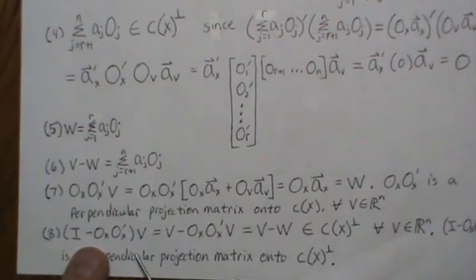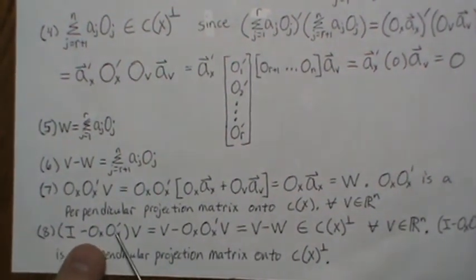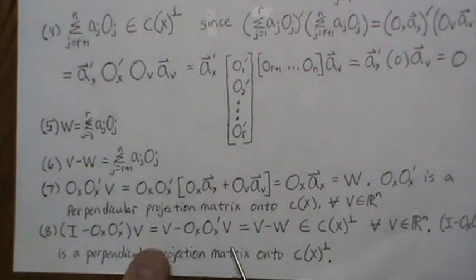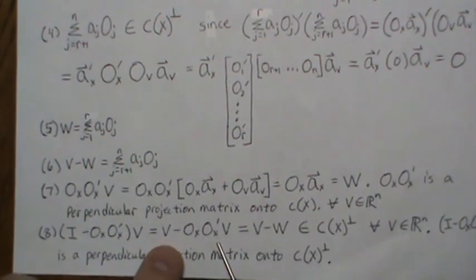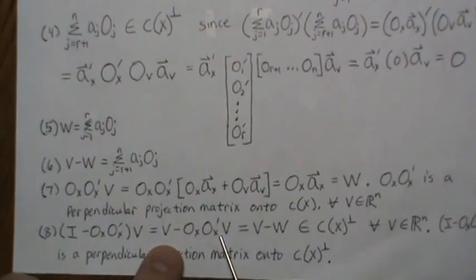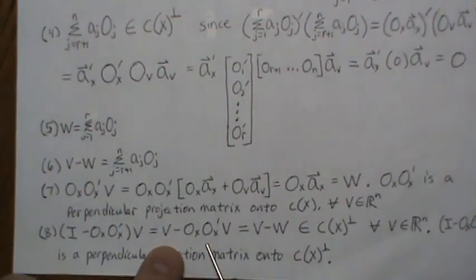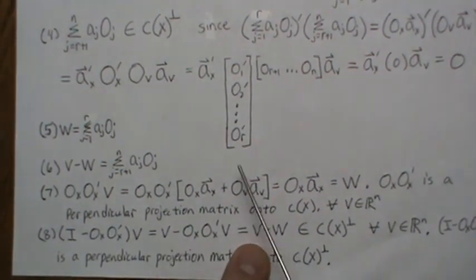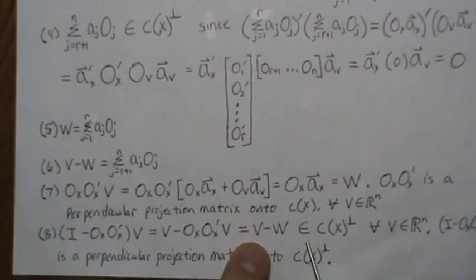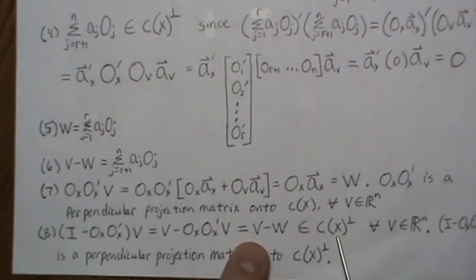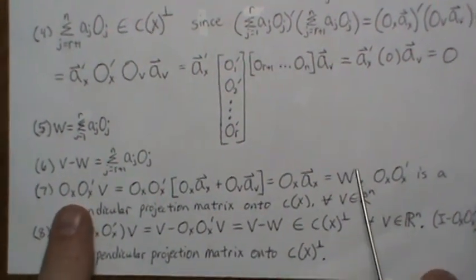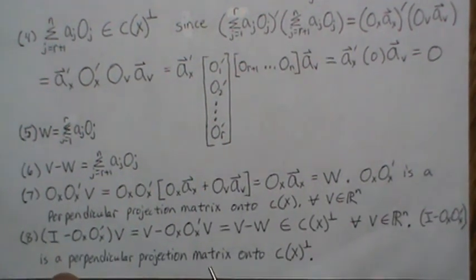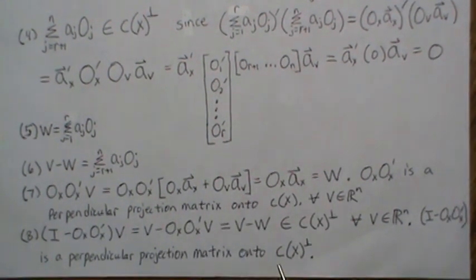Finally, (I - OX·OX^T) times V distributes to V minus OX·OX^T·V, which is V minus W — and that is the vector in the orthogonal complement of the column space of X. This holds for any V. So the matrix I minus OX·OX^T is a perpendicular projection matrix onto the orthogonal complement of the column space of X.